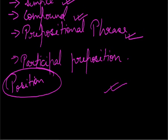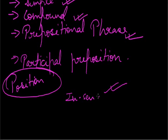A preposition can occur at the end of a clause or sentence in certain constructions. First, in interrogative sentences beginning with a question word. For example: 'What post have you applied for?' — here 'for' is the preposition placed at the end. Second example: 'Which city does he belong to?' — here again the preposition 'to' is placed at the end of the sentence.